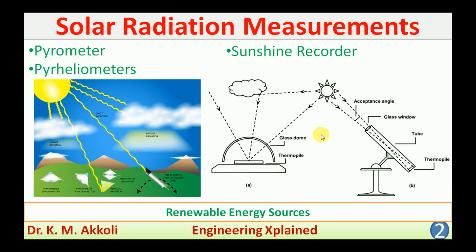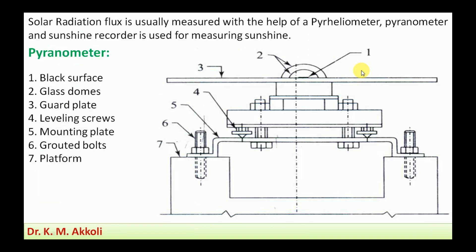Welcome to Engineering Explained channel. In this session, I am going to discuss solar radiation measurements — that is, the instruments which are used for measuring solar radiation. The instruments used are the pyranometer, pyrheliometer, and sunshine recorder. The solar radiation flux is usually measured with the help of a pyrheliometer, pyranometer, and sunshine recorder.